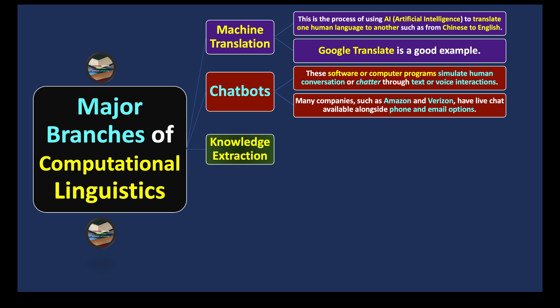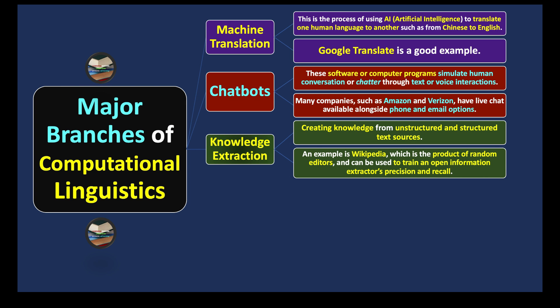Another one: knowledge extraction. How to extract knowledge? Creating knowledge from unstructured and structured text sources. An example is Wikipedia, which is the product of random editors and can be used to train and open information extractors.